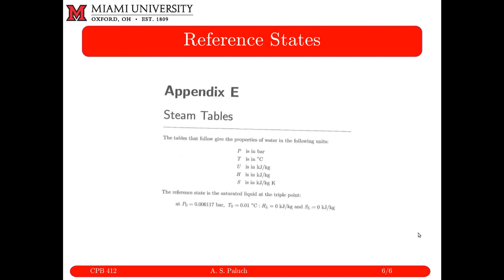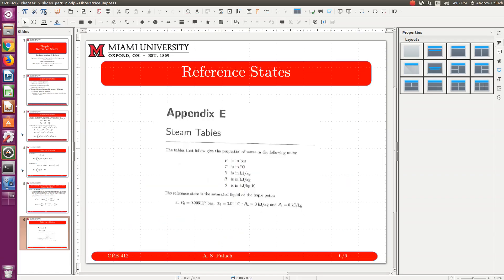Looking at the front page of the steam tables, the reference state is the saturated liquid at the triple point — they tell you T₀ and P₀. At the triple point, all thermodynamic properties are defined as being equal to zero. And so that covers reference states and standard states. That's the end of our notes for Chapter 5.